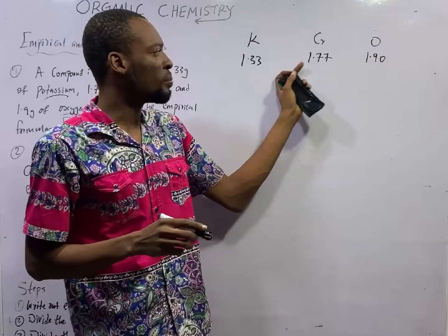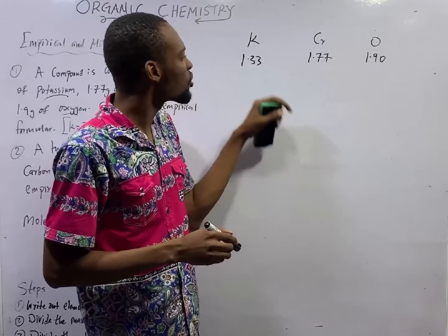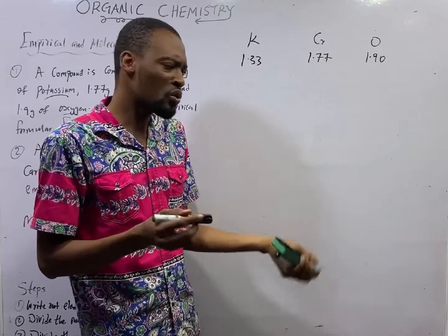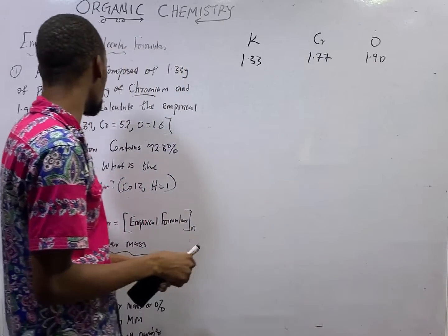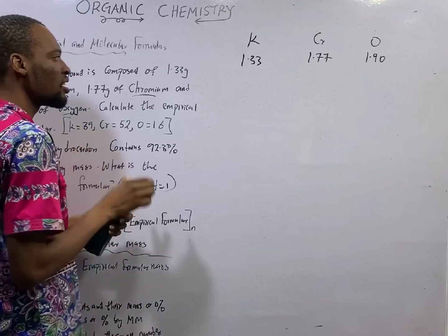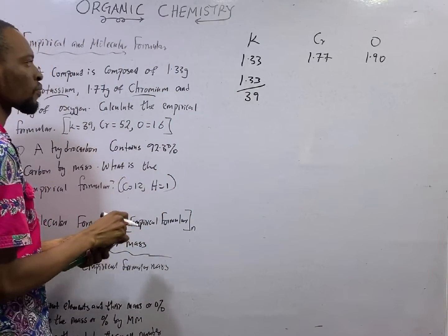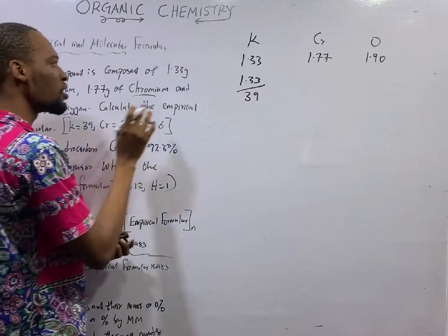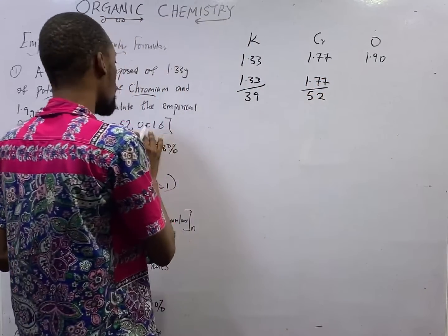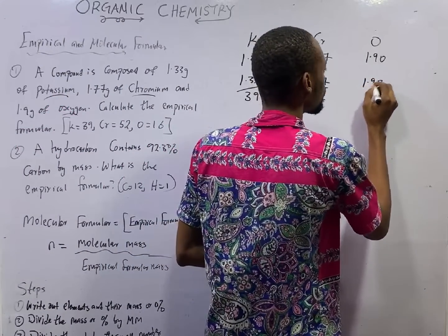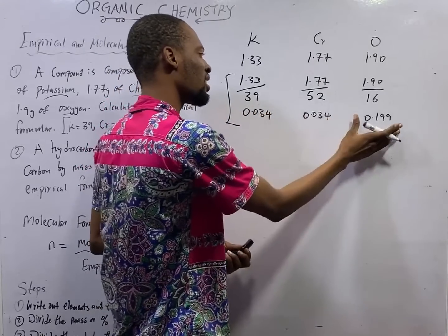The second step is to divide each by the molar mass to get the number of moles. The molar mass will always be given to you. For potassium, molar mass is 39, so 1.33 ÷ 39. Chromium's molar mass is 52, so 1.77 ÷ 52. Oxygen's molar mass is 16, so 1.90 ÷ 16. This gives you the number of moles for each element.